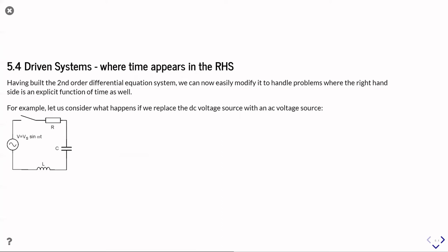In the third, fourth part of this unit, we're going to look at what happens when we introduce our time, our independent variable, into the right hand side of our equation. This is an example of a driven system.